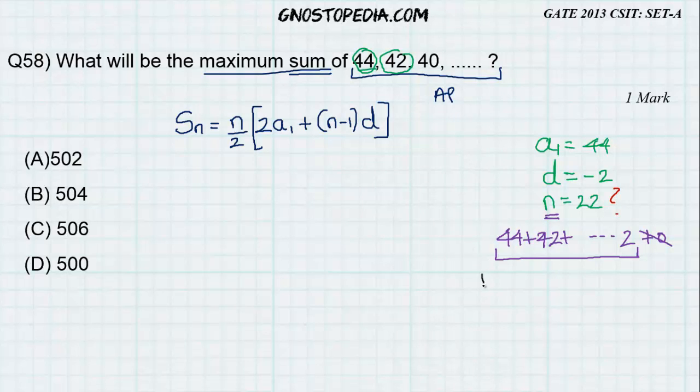Now we know that in the sequence 1 to 44 there exists a total of 44 numbers using the formula last minus first plus 1. That is 44 minus 1 plus 1 which is equal to 44 itself.